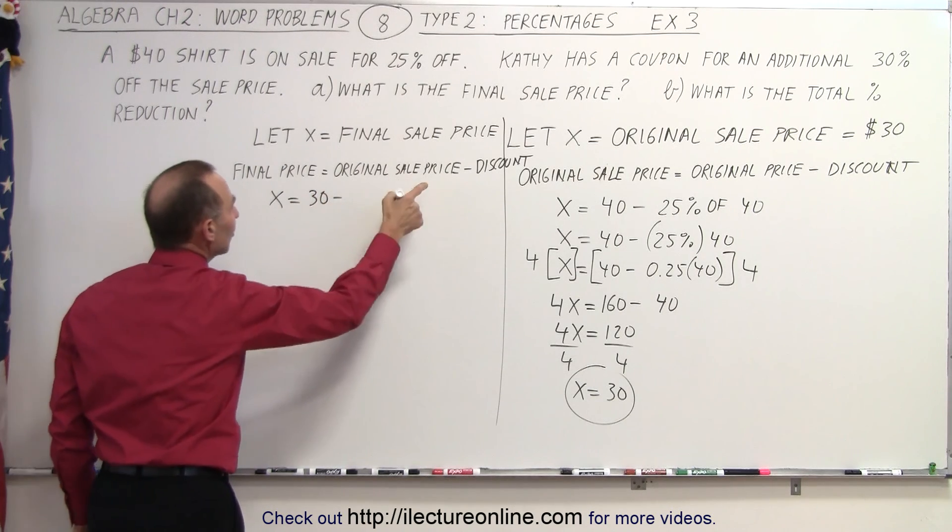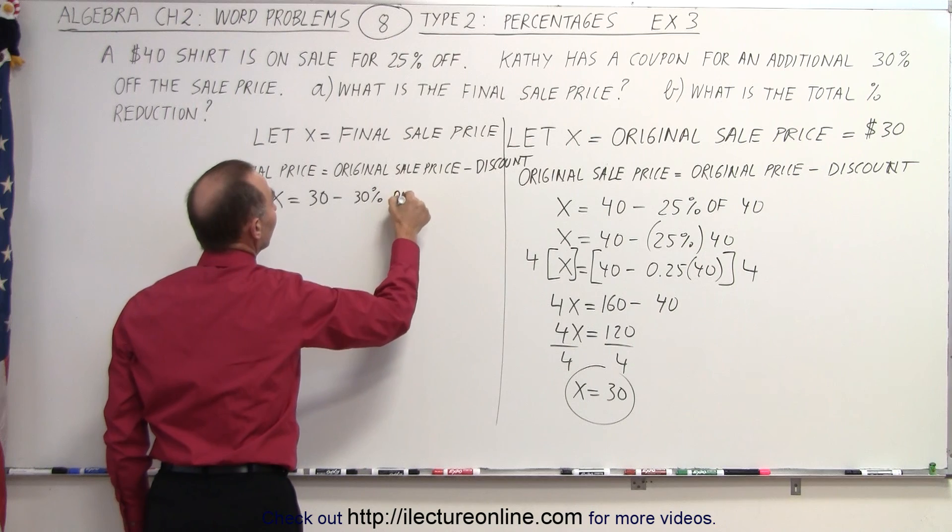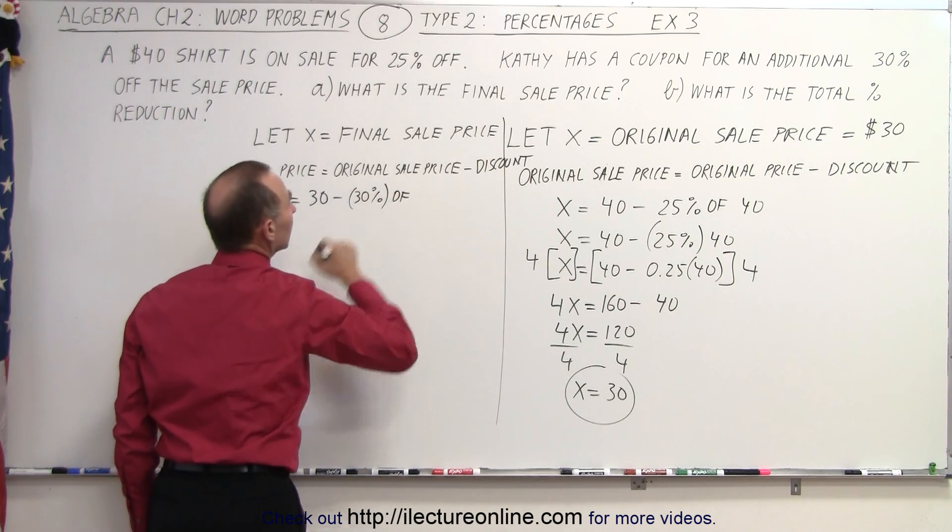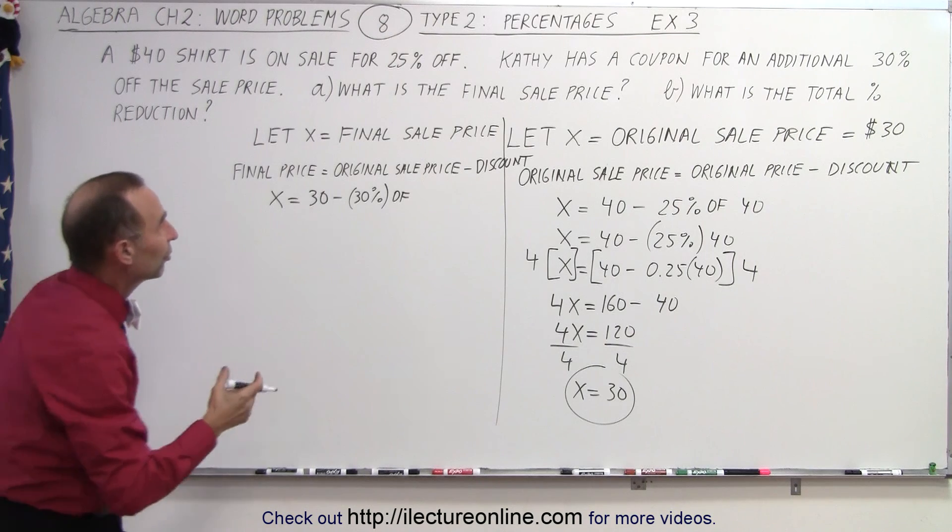minus the next discount. So the final price is defined as x is equal to the original sale price, which was 30, minus the discount, which is 30% of the original sale price, which is 30.